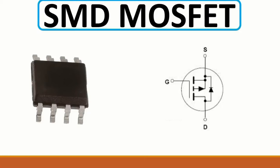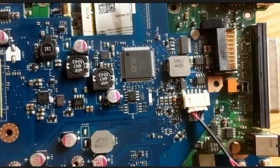Then we have the MOSFET - basically an 8-terminal MOSFET. This is the SMD MOSFET with gate, source, and drain. There are four pins for drain, one pin for gate, and three pins for source. Let's look at the motherboard to find a MOSFET.